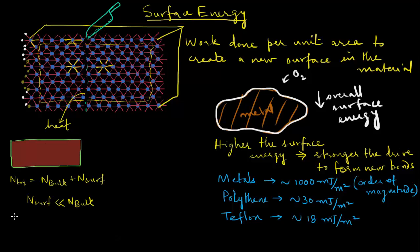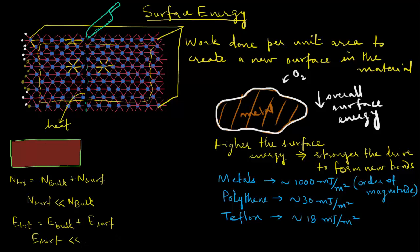The total energy E_total is the sum of energies of all individual atoms in the block — the combined energy of bulk atoms and surface atoms. Since n_surface is so tiny, the energy contribution from the surface atoms is also going to be really small — a very small fraction of the total energy, very small compared to E_bulk.